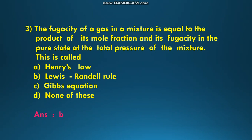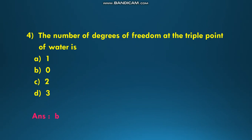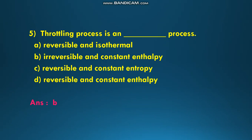The next question is: the number of degrees of freedom at the triple point of water. The options are A: 1, B: 0, C: 2, D: 3. At the triple point, the number of degrees of freedom F is 0, so the answer is B.